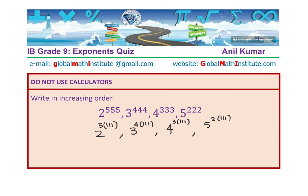So basically, what I am saying is 2 to the power of 5 to the power of 111. So consider this portion: 2 to the power of 5, 3 to the power of 4, 4 to the power of 3, and 5 squared to the power of 111. You get an idea. That is how you could actually write or rewrite.